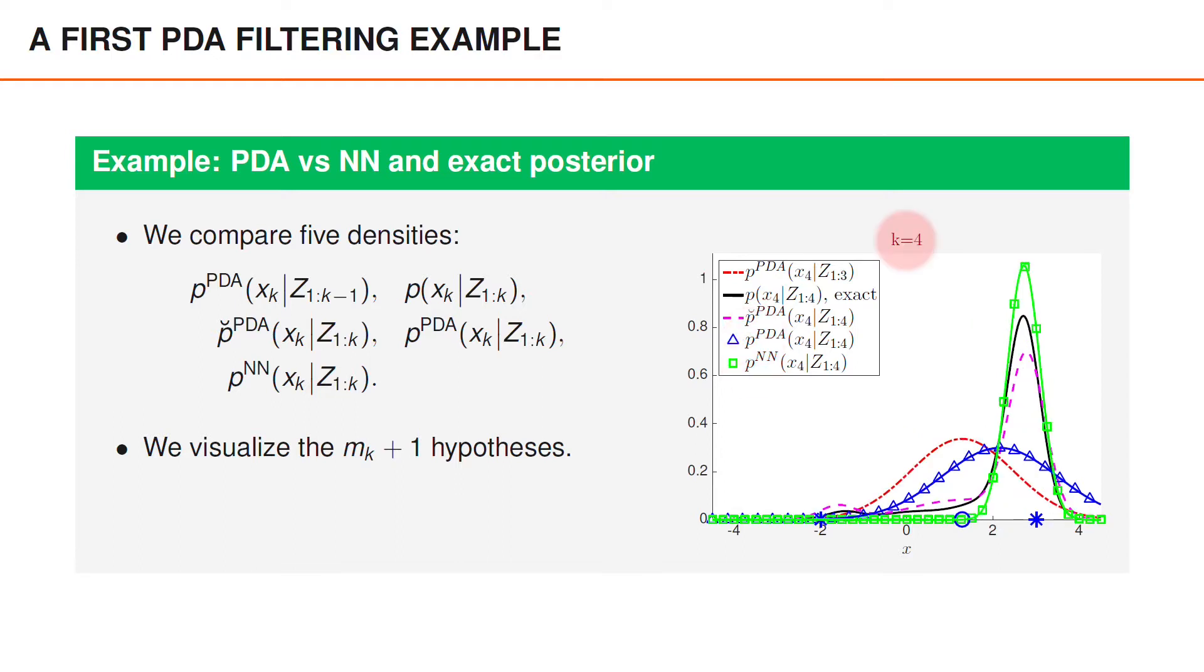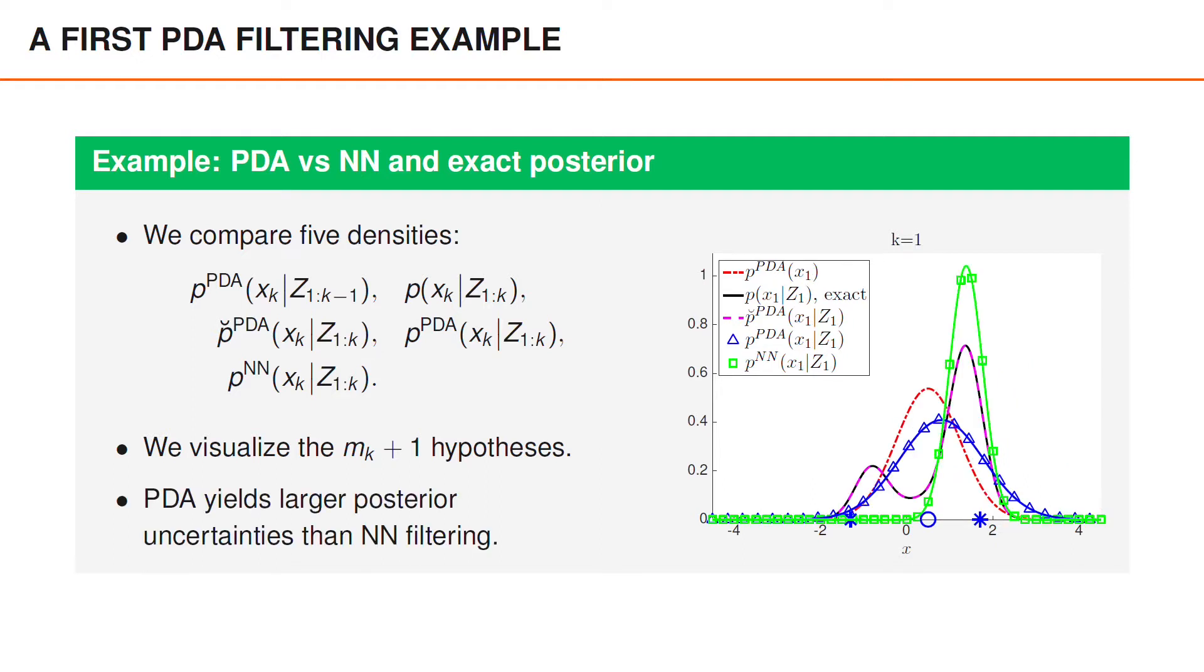At time 4, we have a similar situation. However, as we continue to collect measurements between 2 and 3, both the PDA filter and the nearest neighbor filter agree that the object state is in that region. At time 6, they are both fairly good approximations to the true posterior. One observation from this scenario is that the PDA filter tends to yield larger posterior uncertainties than the nearest neighbor filter.